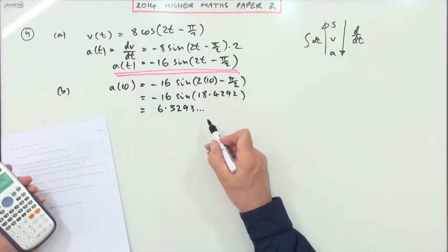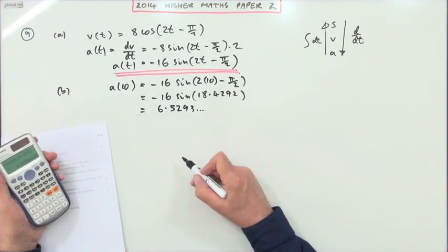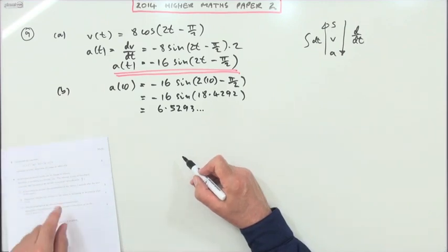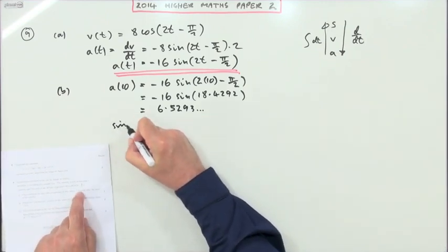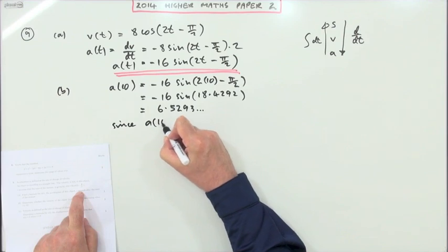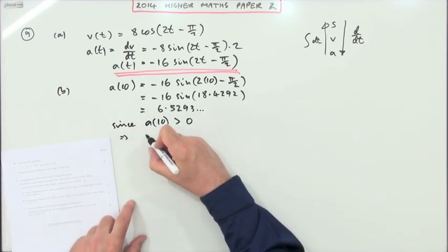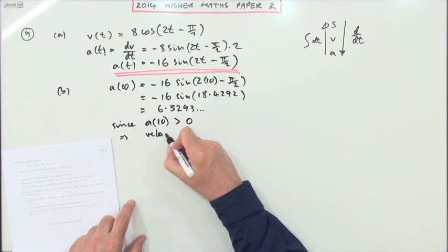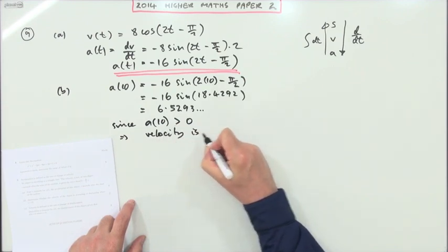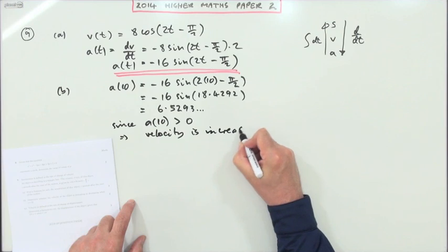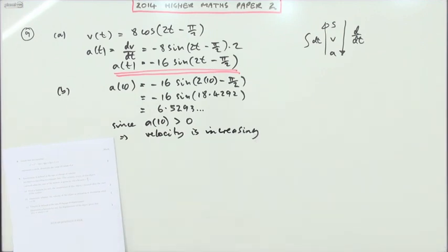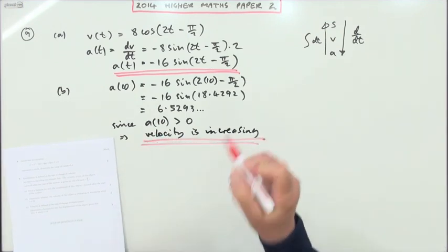Now, the actual value doesn't matter. It's only whether it's positive or negative. So I presume I'll have to make a statement. So I'll say this, since a(10) is greater than 0, that means that the velocity is increasing. Another two marks.